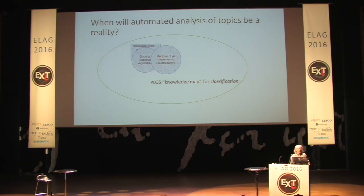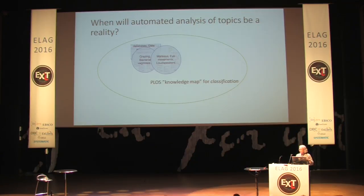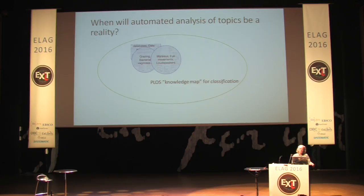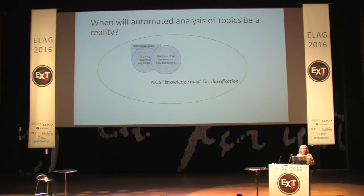Many people are hoping we'll have automated analysis of topics, so we won't have to resort to some of the things we have today in bibliographic data. But like artificial intelligence, this is always 'coming soon' — every day it's coming soon and we never seem to get there. I did a search in the Public Library of Science that just came up with a new knowledge map: I searched for the word 'classification' and got monkeys, eye movements, and loudspeakers. We've got a ways to go, which tells me we can't wait for this — we have to come up with something and we can't say it will be solved by somebody else one day.